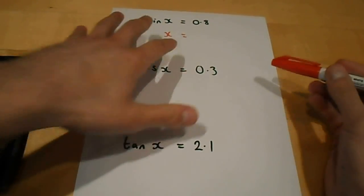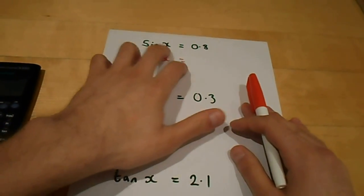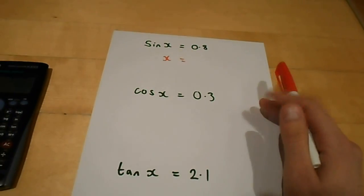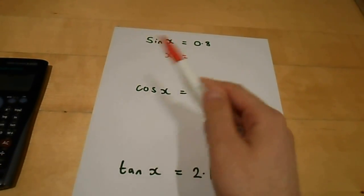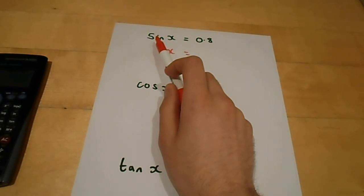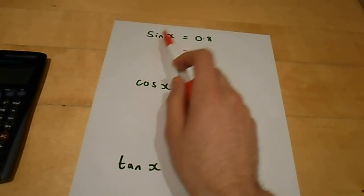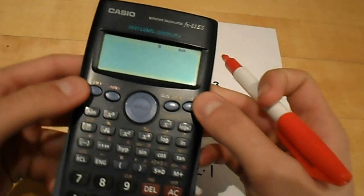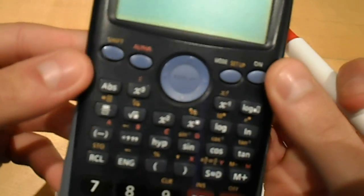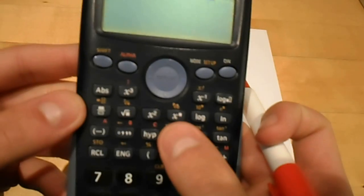So, what I'm going to say is that here sin of x equals 0.8. Now, I want to know what x is. So, sine is a function, and to find x I need to do the inverse of this function. So, to find it on your calculator, you have to press shift,